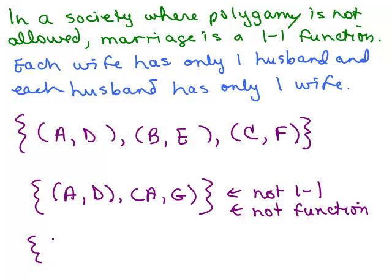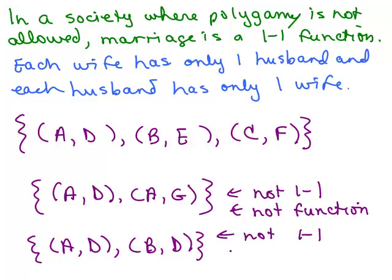What about this situation: a polygamous case where Amy and Beth are both married to Don? This is not one-to-one, but it is a function. Remember, in a function the x values can't be repeated — for every x value there can only be one y — but it doesn't have to go the other way around.